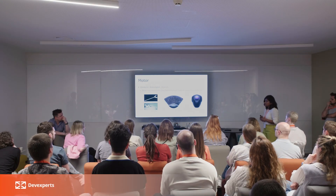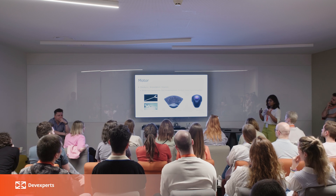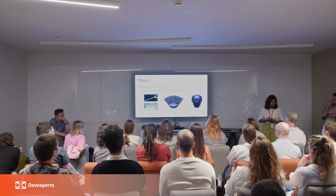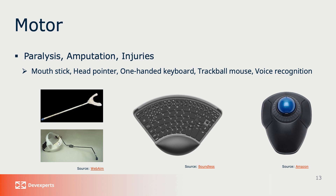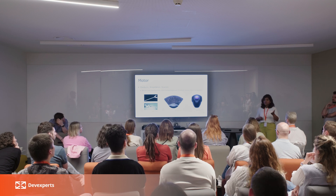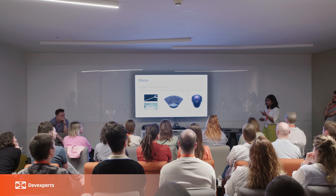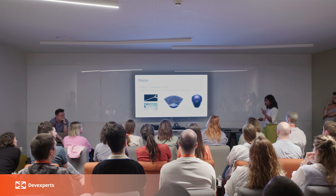Motor disability is related to body movement. People can read the content using their senses, but they are not able to operate or interact with the content. They can use assistive technologies — the first is a mouth stick, where they put it in their mouth and use head movement to point on the screen or use a keyboard. Similarly, they can use a head pointer, a one-handed keyboard, or a trackball mouse — especially for older people who cannot precisely point using a regular mouse. There is also voice recognition software, similar to how Siri and Google Assistant work.